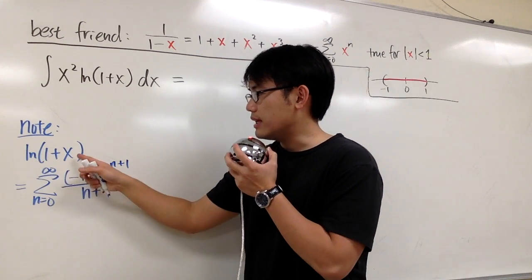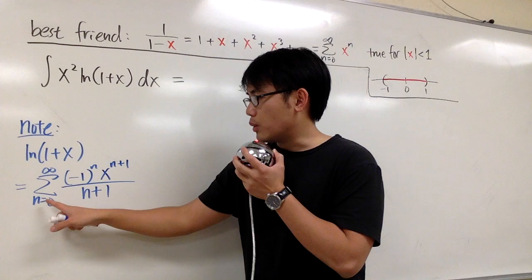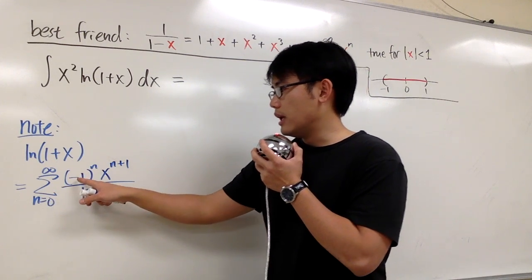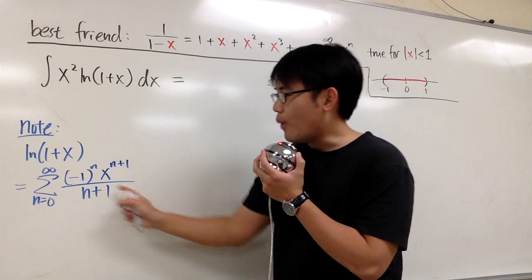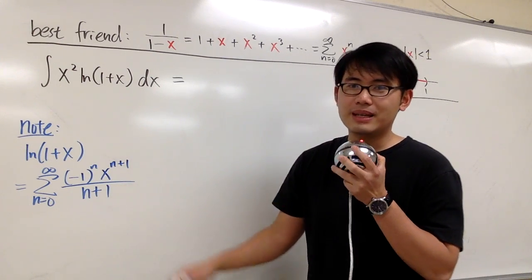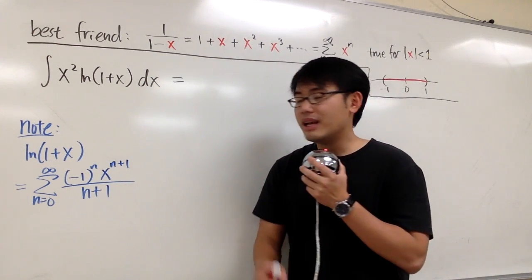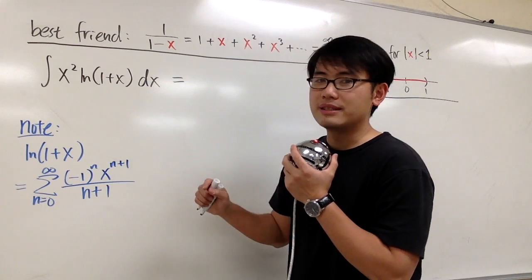First, notice that ln of 1 plus x is the same as sigma where n goes from 0 to infinity, negative 1 to nth power times x to the n plus 1 power over n plus 1, and I have a video on this. But in the back of the book, they like to have x to the n power instead.